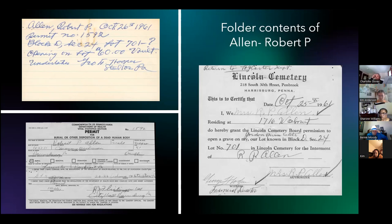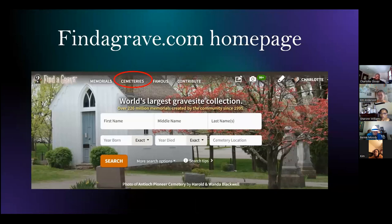I have seen on findagrave.com a question mark behind a plot number that somebody has put in — you could do that as a way of saying that you think this is the correct information. Now you've had the overview of the records that you'll be using. Let's take a look at the process of creating the memorial page using the information from those records. You will go to findagrave.com, sign in, or create your account and then sign in.